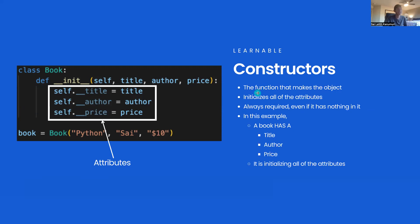Even if it has nothing in it, the constructor is always required. For example, in this case a book has a title, author, and price, and the constructor is initializing those attributes.